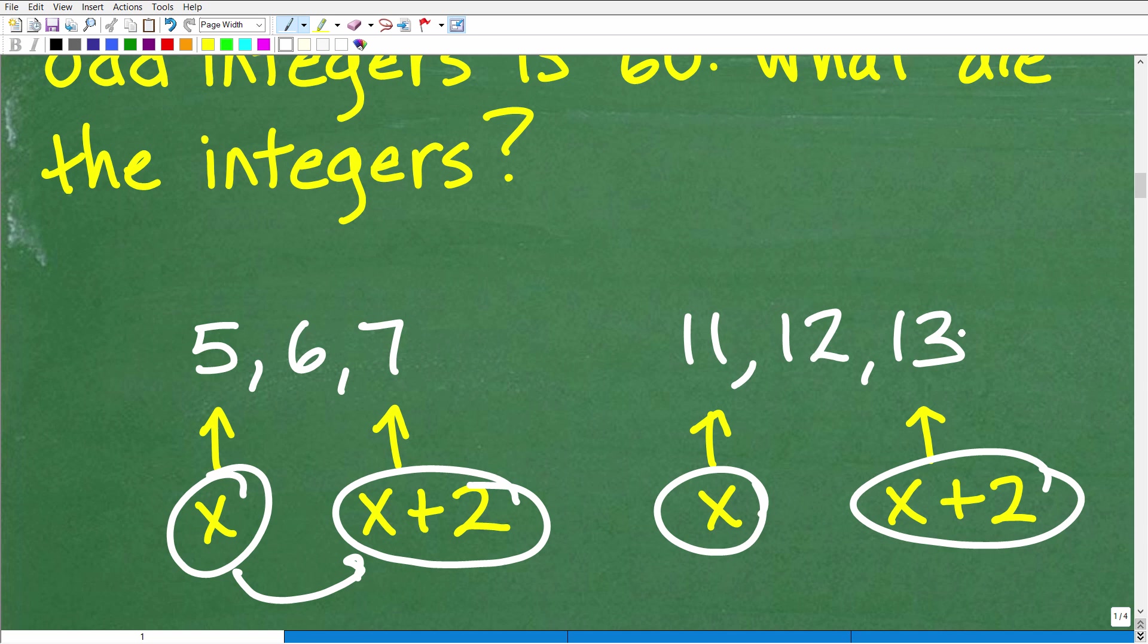And you can see this pattern play out with any set of integers. Like 11, 12, 13, these are integers, odd, odd. Just whatever your integer is X, add two to it, and you get your next odd integer, your consecutive odd integer.